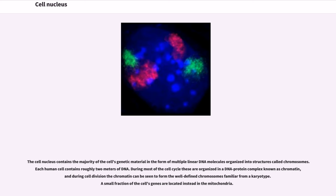The cell nucleus contains the majority of the cell's genetic material in the form of multiple linear DNA molecules organized into structures called chromosomes. Each human cell contains roughly 2 meters of DNA. During most of the cell cycle these are organized in a DNA-protein complex known as chromatin, and during cell division the chromatin can be seen to form the well-defined chromosomes familiar from a karyotype. A small fraction of the cell's genes are located instead in the mitochondria.